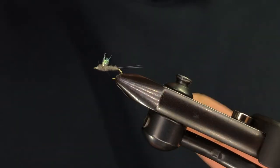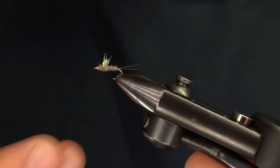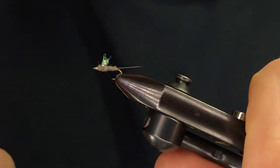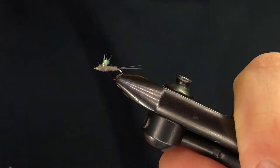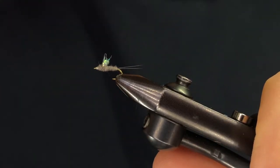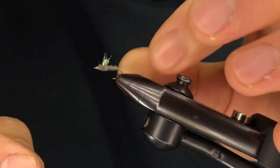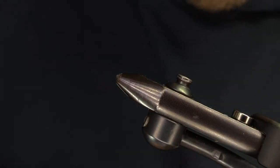Hey everyone, grab your vices, grab your tools. We're going to be tying the RS2. This is a great fly that's really popular out west to imitate smaller mayflies. I use it a lot here in Michigan for smaller mayflies like blue-winged olives and sulfurs. It's really simple. It uses three main materials and it shows you some cool techniques that you wouldn't use otherwise. Let's get started.